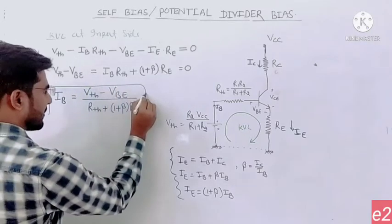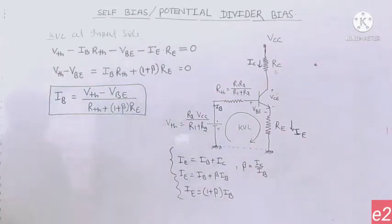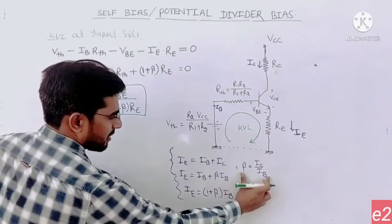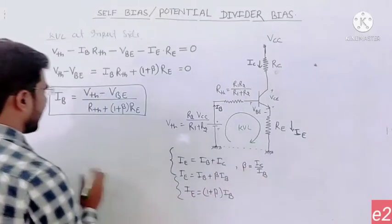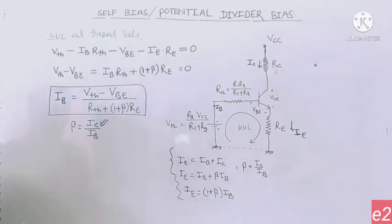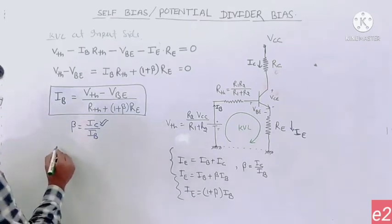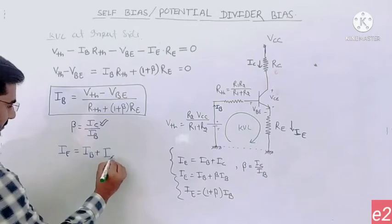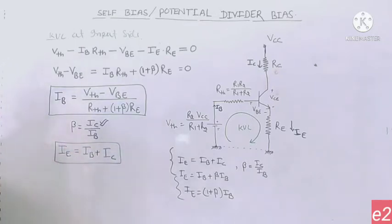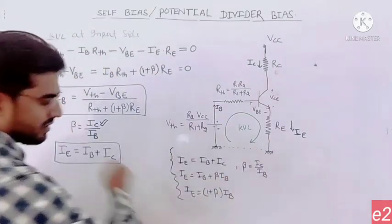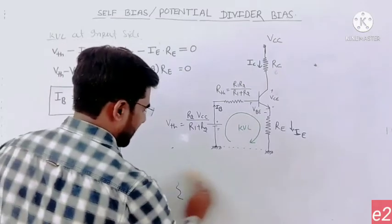Now that we have IB, using beta = IC/IB we can find IC = beta·IB. And since IE = IB + IC, we can easily find the emitter current IE. So from the input side calculation we have obtained IB, IC, and IE. Now we will apply KVL at the output side.